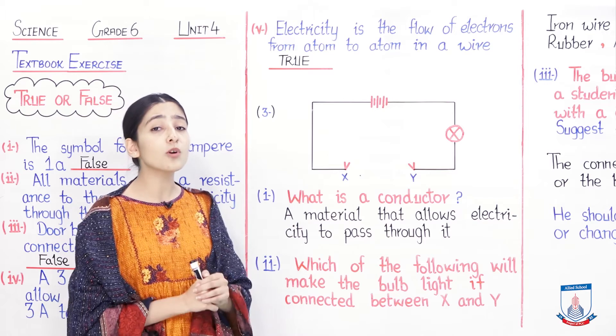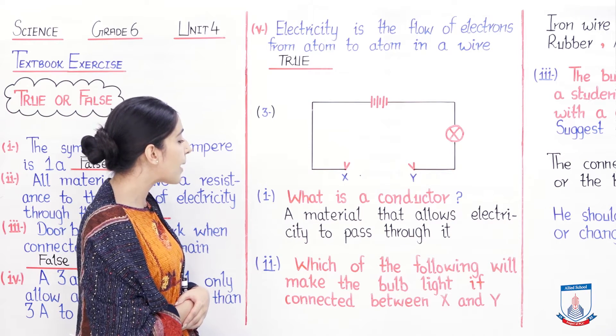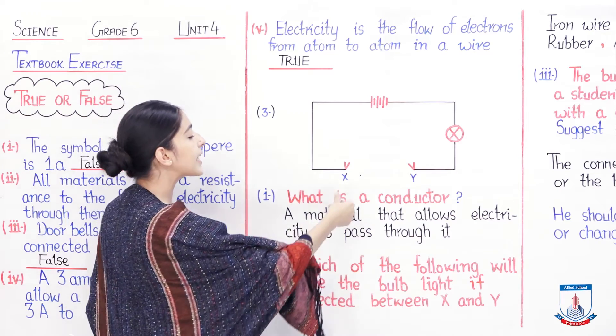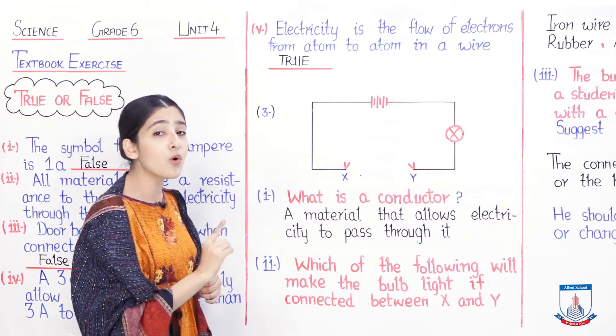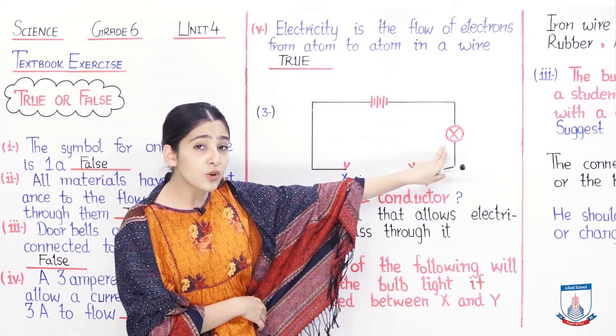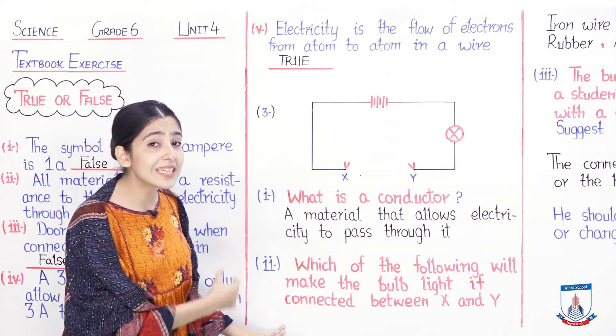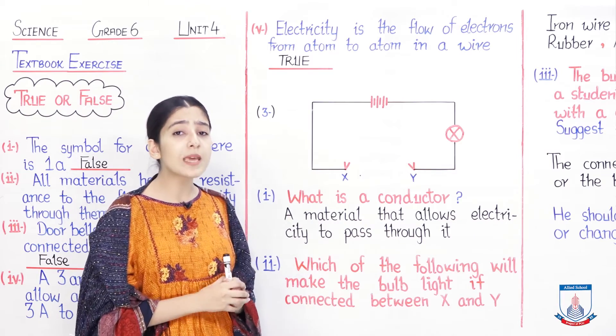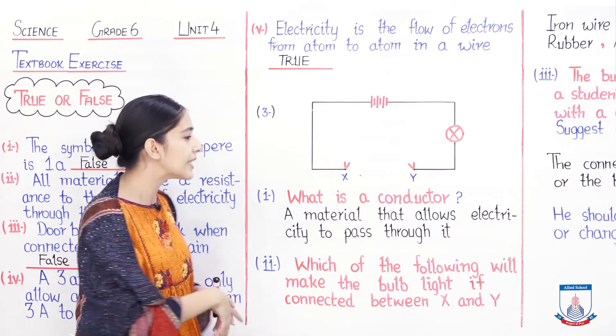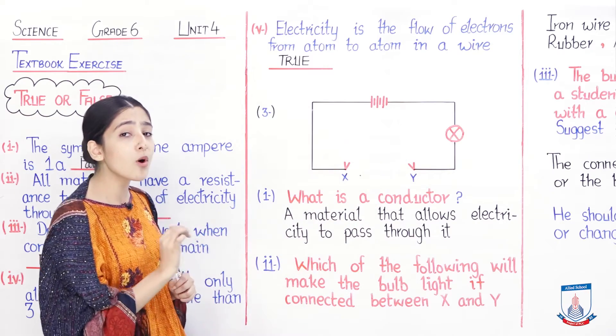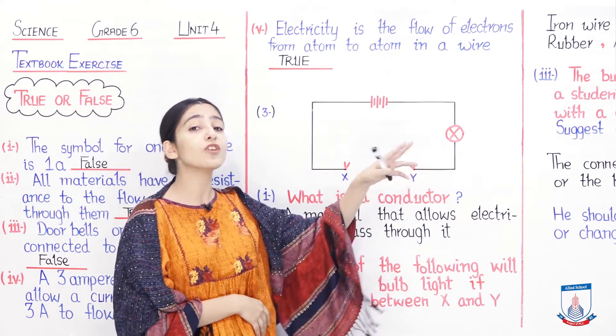Which of the following will make the bulb light if connected between X and Y? Aapko pata hai ki X aur Y do switches hain. Agar yeh aapas mein connect honge, tabhi current flow karega aur hamara ye jo lamp hai, yeh light hoga. Agar yeh aapas mein connect nahi hote, toh lamp bhi light nahi hoga. Ab yahaan peh hamein ek list of materials given hai jo ke maine second board pe likhe.